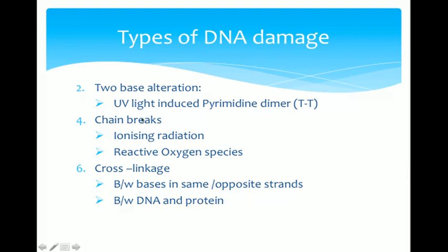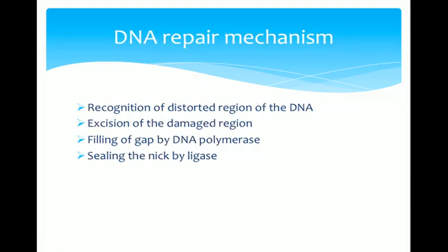Other types include two-base alteration: UV light-induced pyrimidine dimers, with the thymine-thymine (TT) dimer being the most common. Chain breaks caused by ionizing radiations can break single or double-stranded DNA. Reactive oxygen species can also break DNA, and there may be cross-linkage between one strand and another, within the same strand, or between DNA and protein.